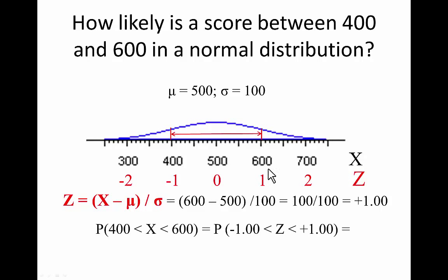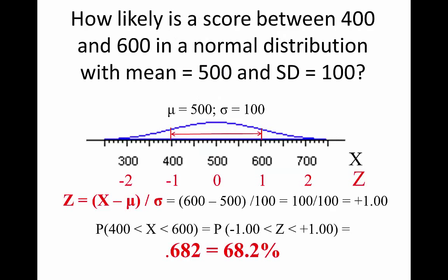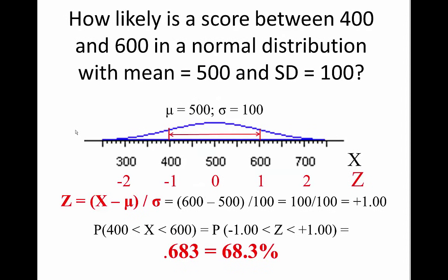Now we can find the probability of finding a z-score between one and negative one, which is equivalent to having an x-score between 400 and 600. We go to our standardized normal distribution and look at what percent of scores fall between one standard deviation above and one standard deviation below the mean — it's about 68%. So the answer is that about 68% of the scores would be expected to fall between 400 and 600.